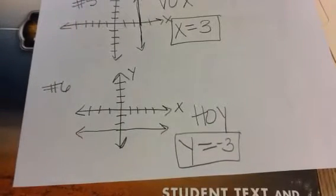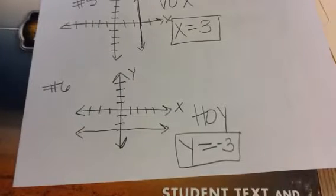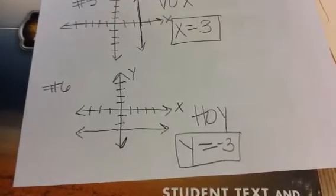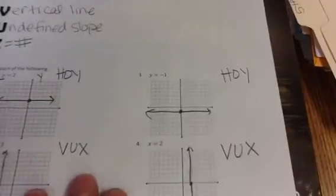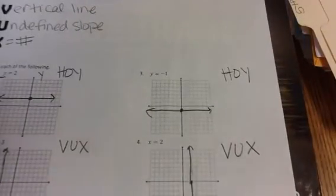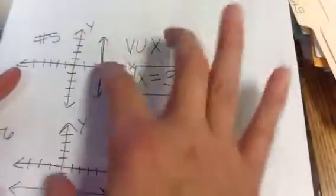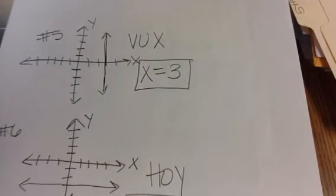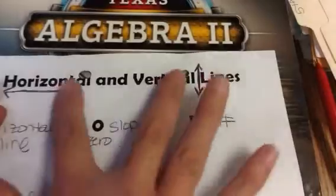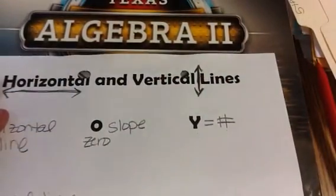So HOY and VUX: HOY — Horizontal, zero slope, Y equals a number; VUX — Vertical, undefined slope, X equals a number. Your assignment is set up the same way: four equations to graph, four questions to answer, and two where you're given the graph and have to write the equation. When you're done, put it in your folder and put your notes on the side as always.